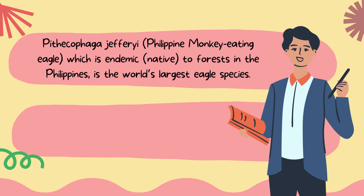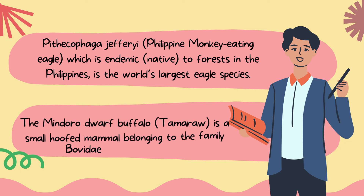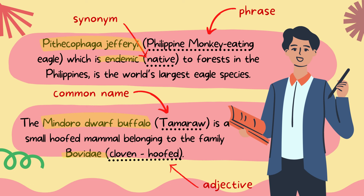Piticophaga jeffrey, which is endemic to forests in the Philippines, is the world's largest eagle species. Another example: the Mindoro dwarf buffalo is a small-hoofed mammal belonging to the family Bobidae. In the examples, the informal definitions took the shape of a synonym and a phrase.